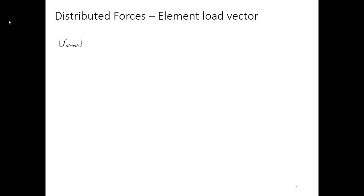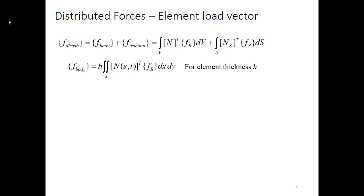We're looking for the element load vector for an isoparametric quadrilateral element. We start with that load vector, call it f-distributed, and break it into two pieces: a portion for body forces and a portion for traction forces. For our body force term we integrate over the volume of the element, and for the traction or surface term we integrate over the surface where the traction is acting. Remember the surface and the volume reference the fact that we're looking at a 2D element, but it has some thickness out of the screen at us. So that thickness we're going to call h.